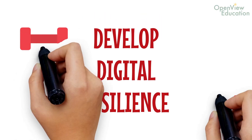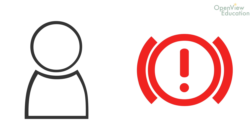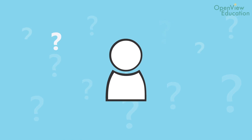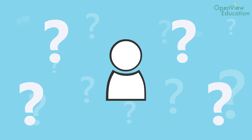Develop digital resilience. Support your child to develop digital resilience by showing them how to block other users, and talk to them about what information we shouldn't share online. Talk to them about when they should come and speak to you, and what they can do if someone online is asking them lots of questions. This will help them to learn how to communicate with others safely online.